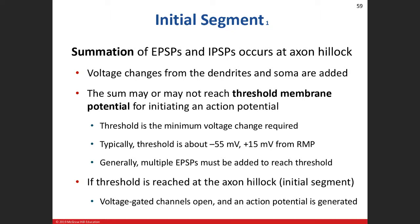Our goal is to get signals to the initial segment for our action potential to be generated. The term we use is summation — when we add up all the EPSPs and all the IPSPs. One EPSP and one IPSP will basically cancel each other out.